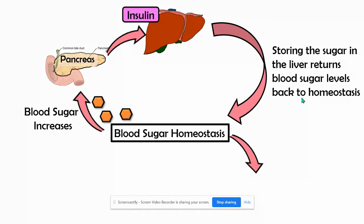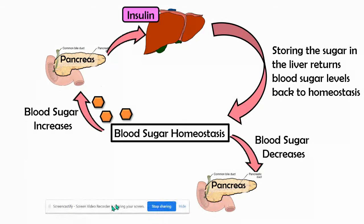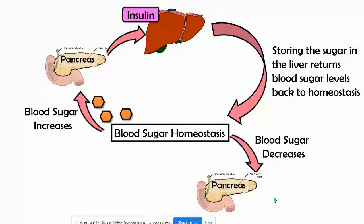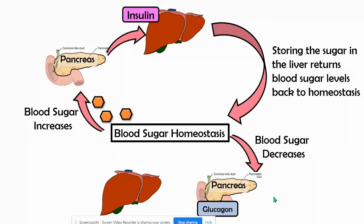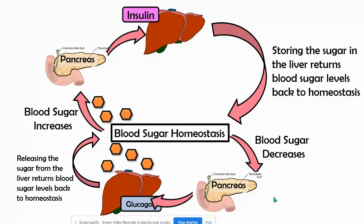Then over time, if our blood sugar drops or decreases, our pancreas is going to release an opposite hormone to insulin. It's going to tell our liver cells that we need to send that sugar back into our bloodstream. That hormone is called glucagon. Once glucagon reaches the liver, the liver will send the sugar it was storing back into the blood to bring us back to homeostasis.